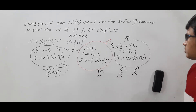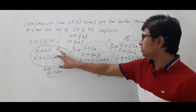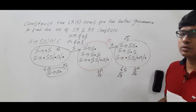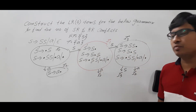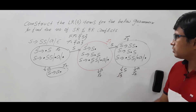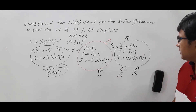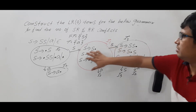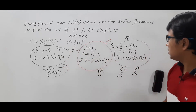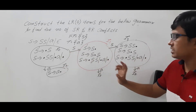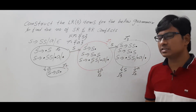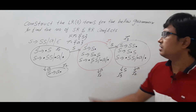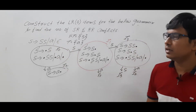So how many items did we get completely? 0, 1, 2, 3 — totally four items. From I0 we got I1 and I2; from I1 on S and A we got; from I3 on S and A we got. So I can say that the construction of LR0 items for the given grammar is completed.